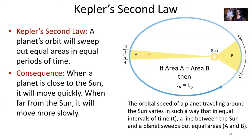A consequence of this is that when a planet is close to the sun, it's going to move really quickly, and when it's far away from the sun, it's going to move more slowly. We have to sweep the same area in the same amount of time, but when we're closer to the sun, we have to go a longer distance. Same amount of time, but a shorter distance farther away. Speed is distance divided by time, so going a larger distance between points one and two means our speed must be increased when closer to the sun.